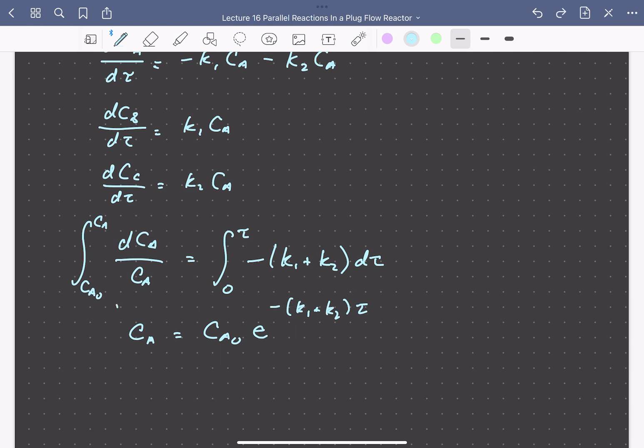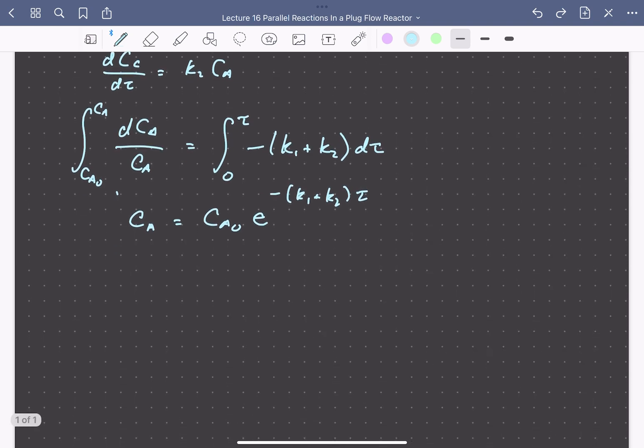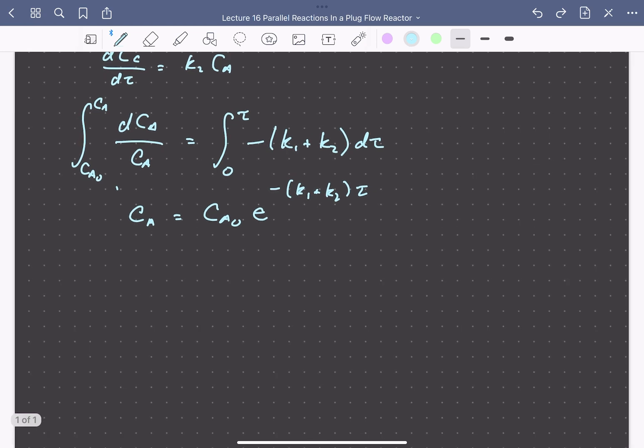We can plug this expression for A into the mole balances for B and C. For B, dCB/dτ equals K1 times CA, which we can write as CA0 times e to the minus (K1 plus K2) times τ.